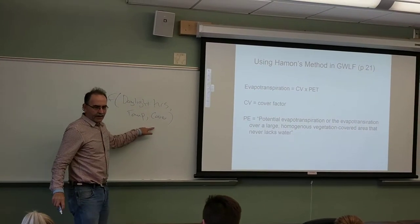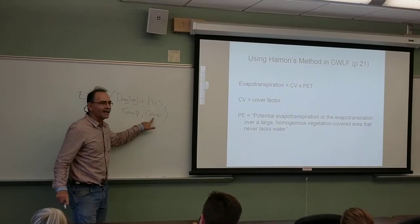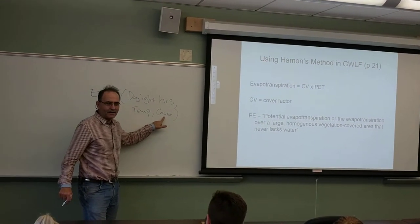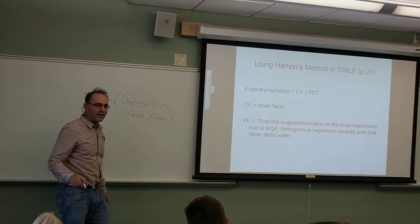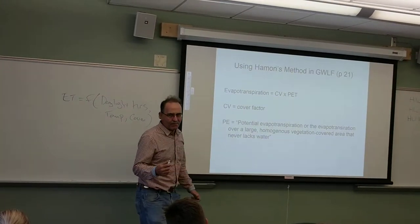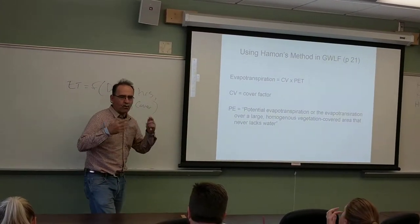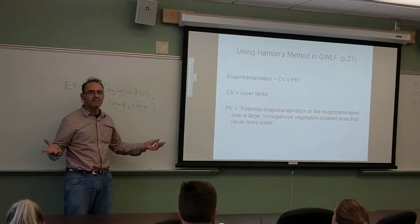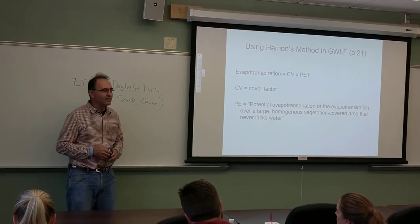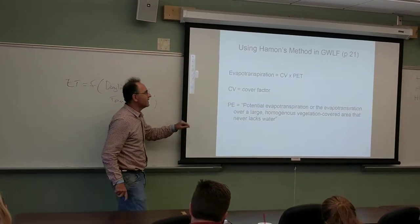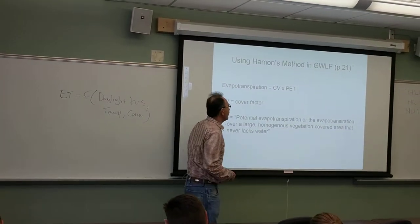If you have 50 acres and 25% of those acres are covered by cement, it doesn't matter how many daylight hours you have. Also, in the summer, sometimes when you get below wilting point and your plants begin to wilt, your evapotranspiration is not as high. So we're going to look at this whole idea of potential evapotranspiration.